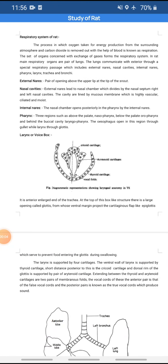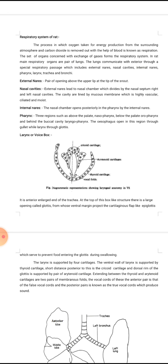Today I will teach you about the respiratory system of the rat. The respiratory system consists of external nares, nasal cavity, internal nares, pharynx, larynx and voice box, and the main respiratory organ is the pair of lungs.